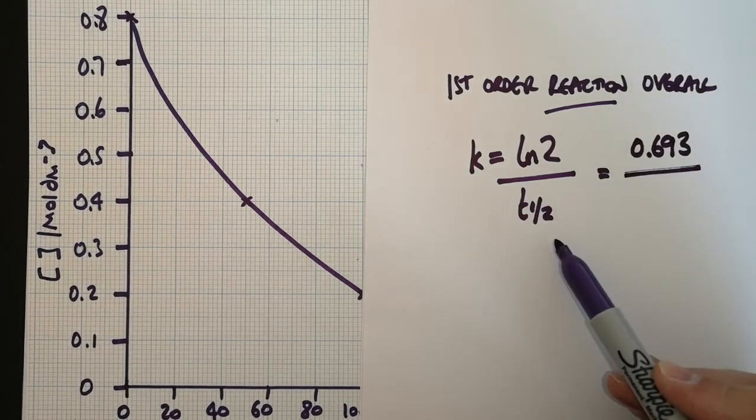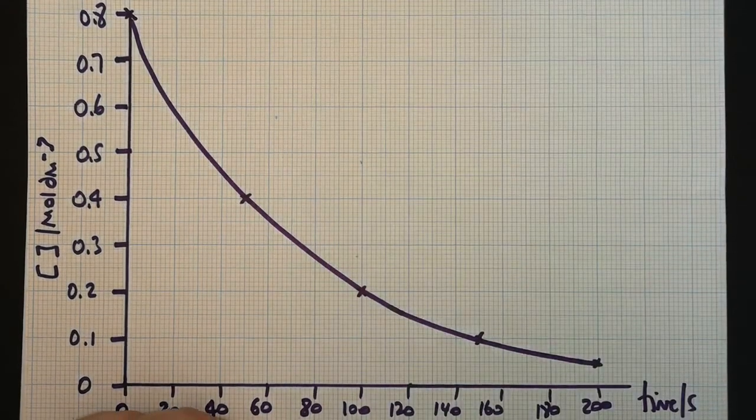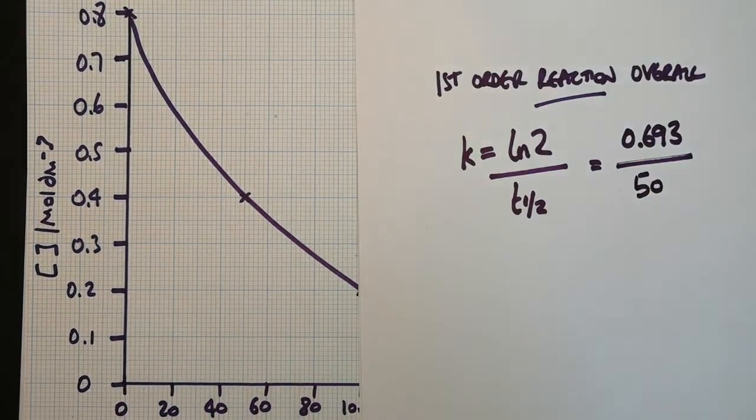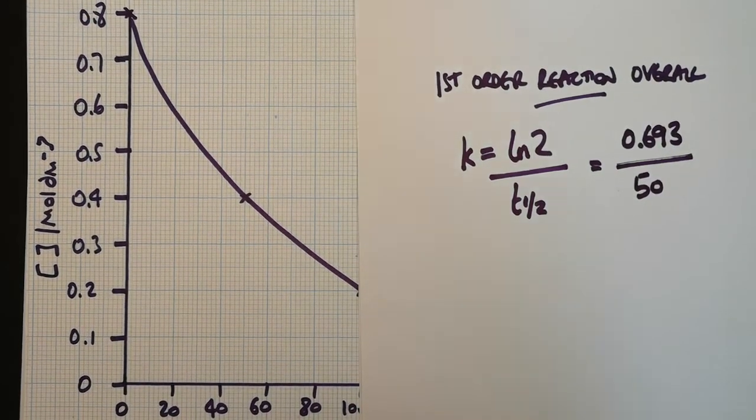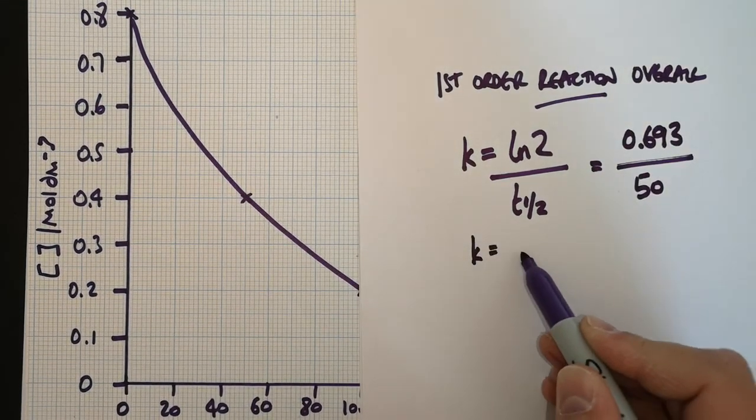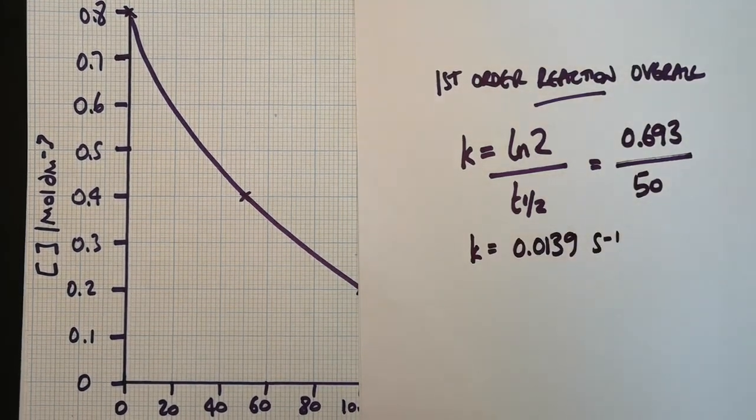If I then divide that by the half-life, which in this example is 50 seconds, then I get my rate constant, an actual value of a rate constant. So 0.693 over 50 gives me a value of 0.0139 seconds to the minus 1.